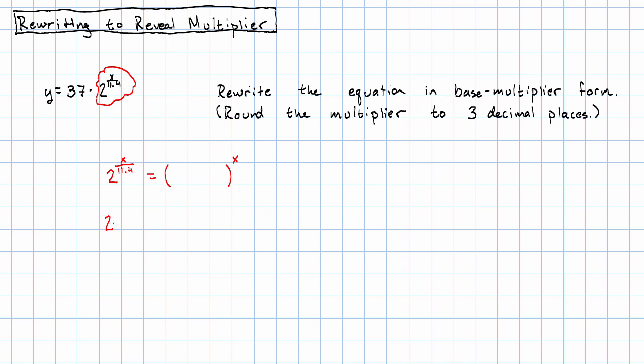Well, two to the power of x over eleven point four, that's two to the power of one over eleven point four times x. Right, that's what it means to have x over eleven point four. If I write the x over one, that becomes more obvious.